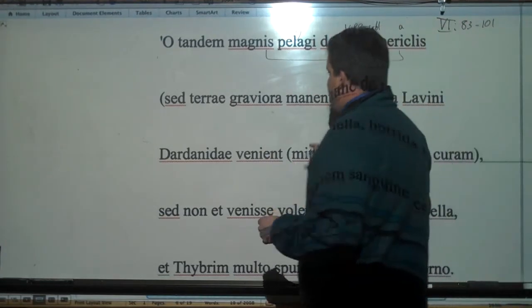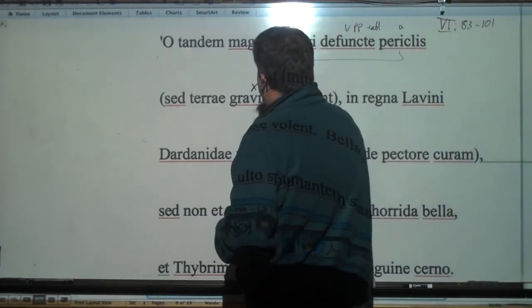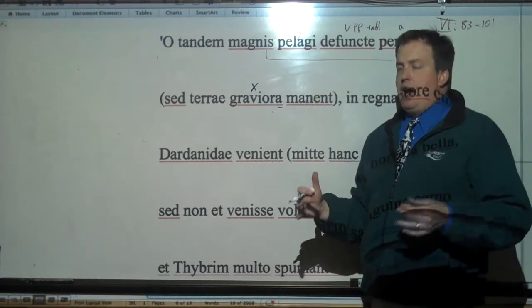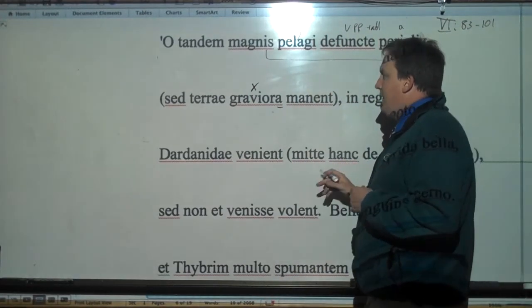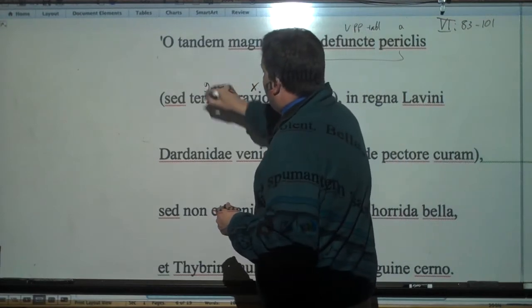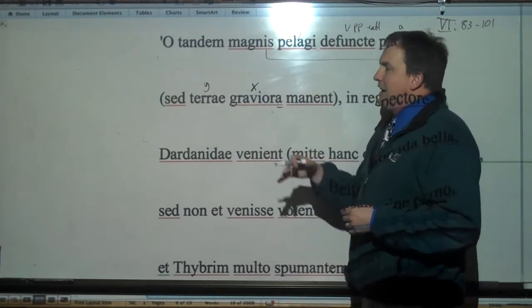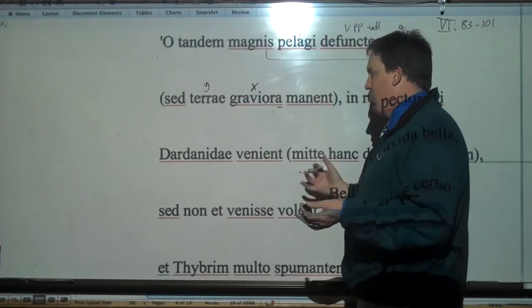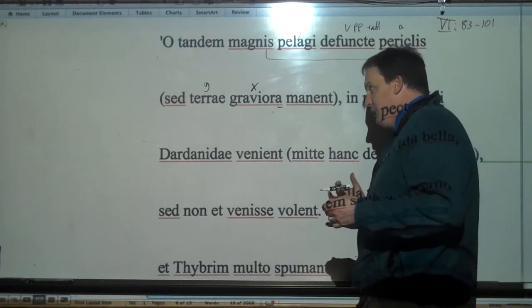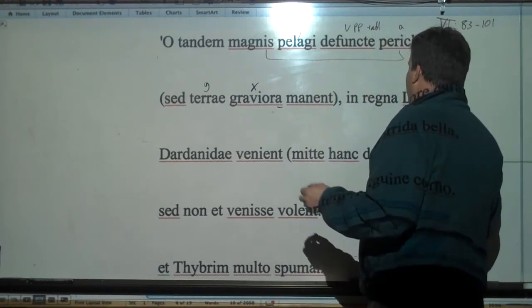But she says in a second, graviora - graver things remain in regna Lavini. Terrae could also be a weird locative, generally you do not put terrae in a locative, but it could be. But graver things remain of the earth.